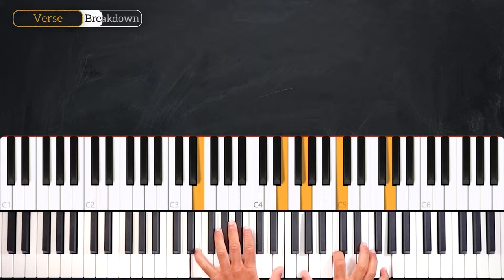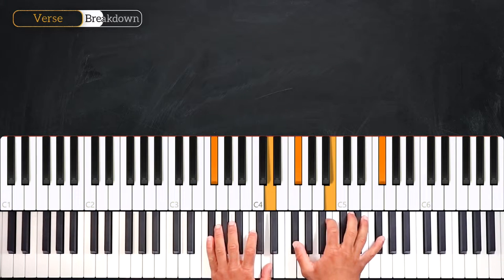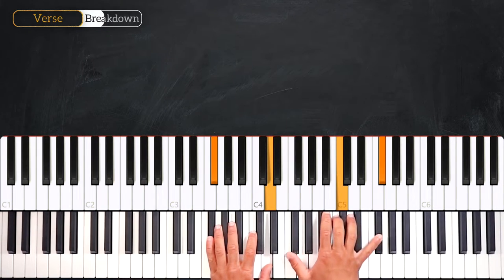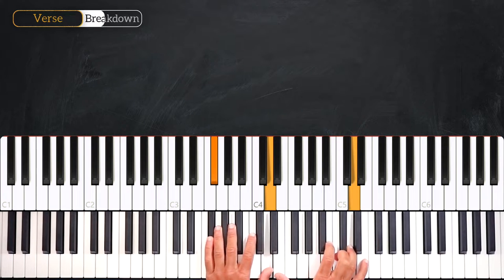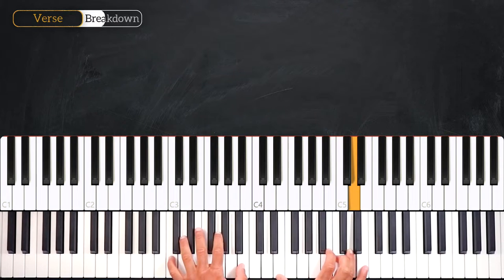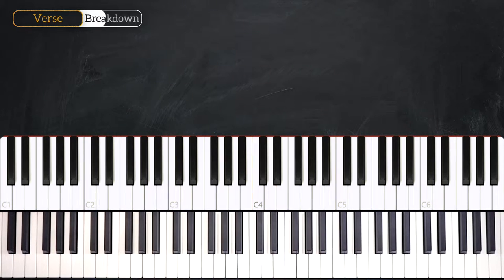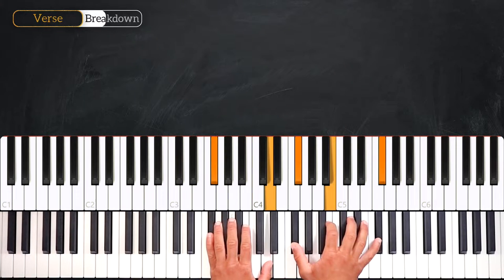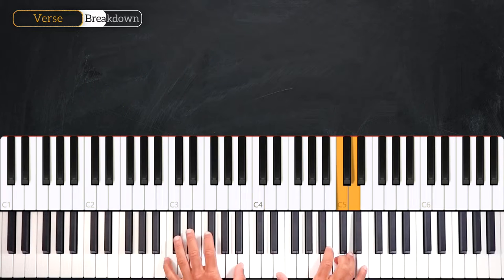Then we play the B minor over F sharp. 1, 2, 3. And then on the 4th beat we'll play C, D into the C major 7. So again. 1, 2, 3, 4, 1.